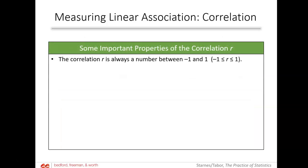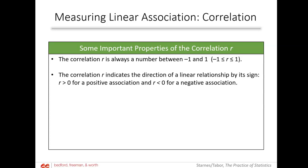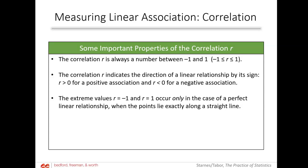Some facts about R: it is between negative 1 and 1, inclusive. The correlation R indicates direction by its sign — if R is greater than 0, you have a positive association; if less than 0, a negative association. The extreme values of negative 1 or 1 occur only if you have a perfectly linear relationship. A value like 0.998 will look very linear with just a little deviation, but it's only perfect if correlation is exactly 1 or negative 1.